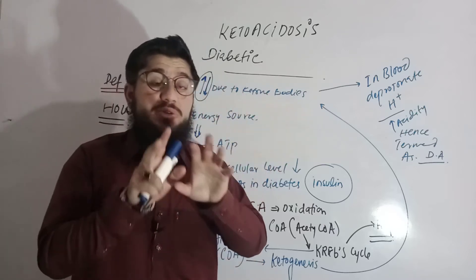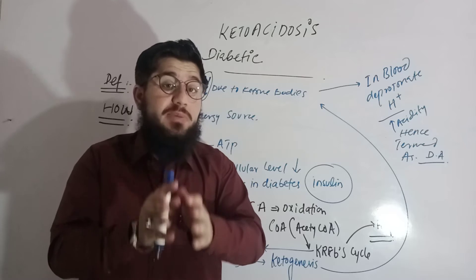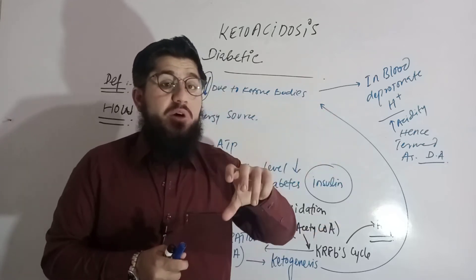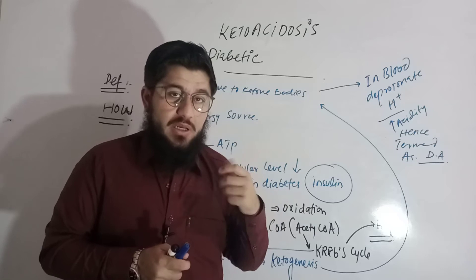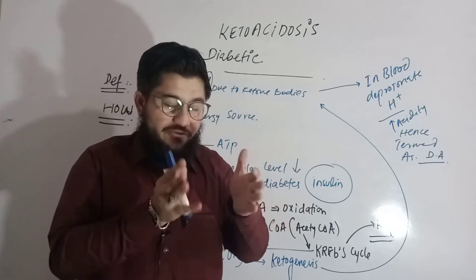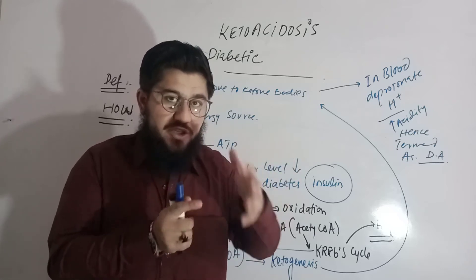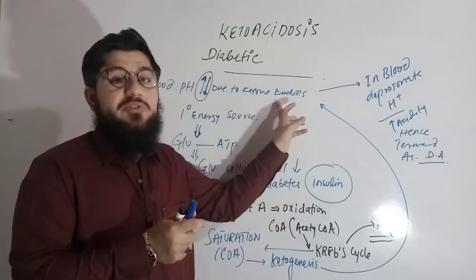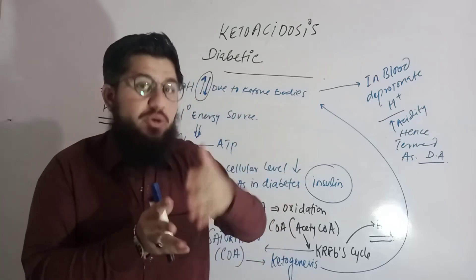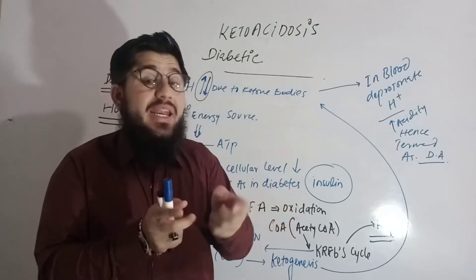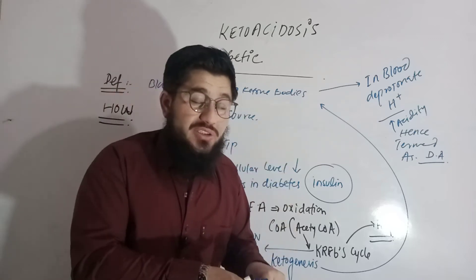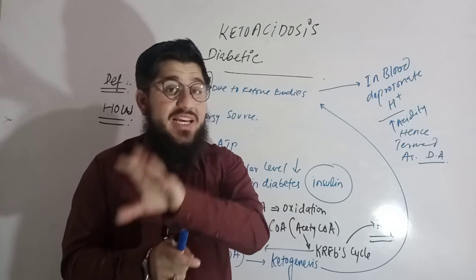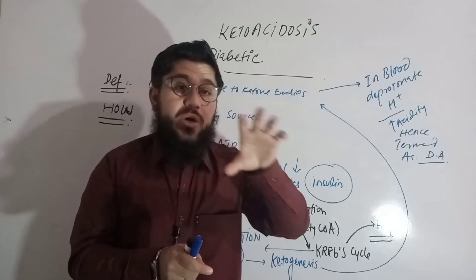These ketone bodies are actually responsible for changing the pH of the blood in terms of acidity — ketone bodies create an acidic environment. This kind of pH change is known as acidosis, because of ketone bodies, so it is known as ketoacidosis. And if this ketoacidosis is because of diabetes, then it is named diabetic ketoacidosis.